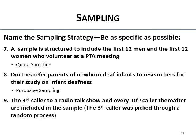The third caller to a radio talk show and every 10th caller thereafter are included in the sample. The third caller was picked through a rule, and we start at a random place and then use a systematic rule — that's systematic random sampling.